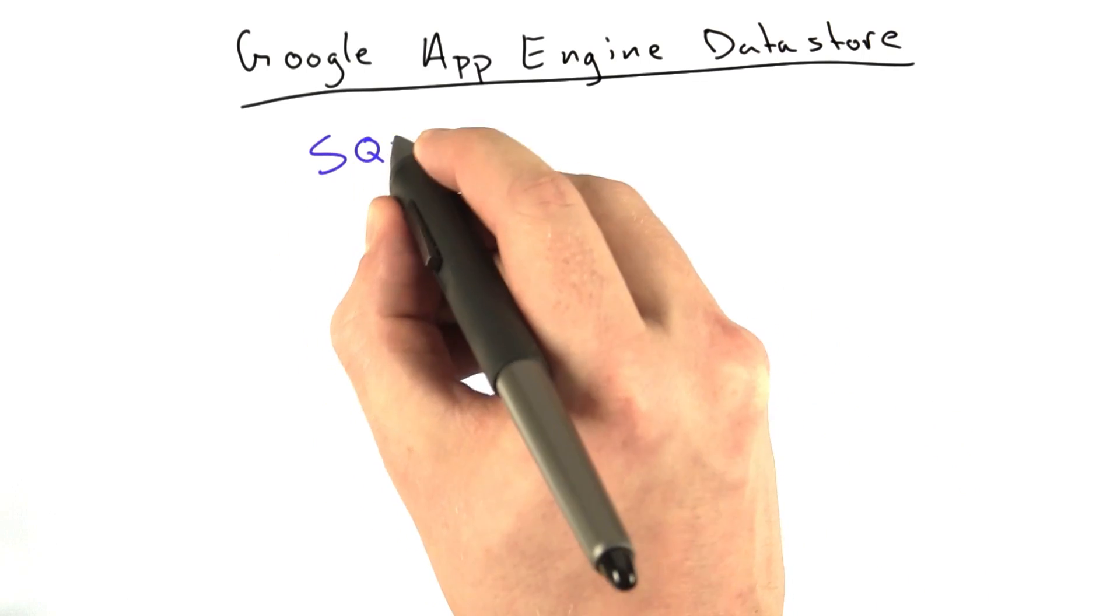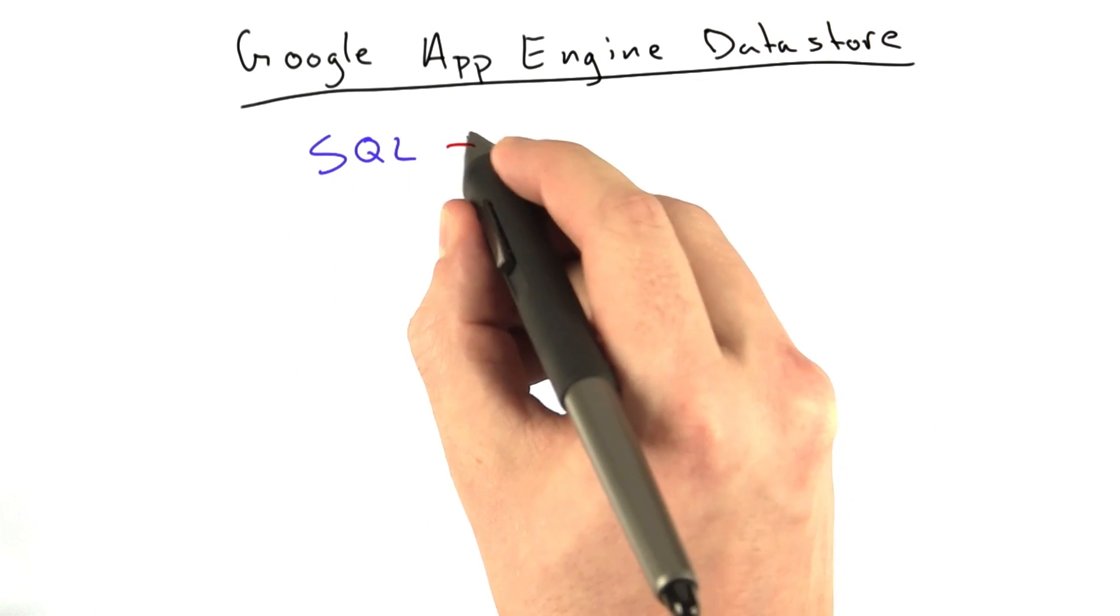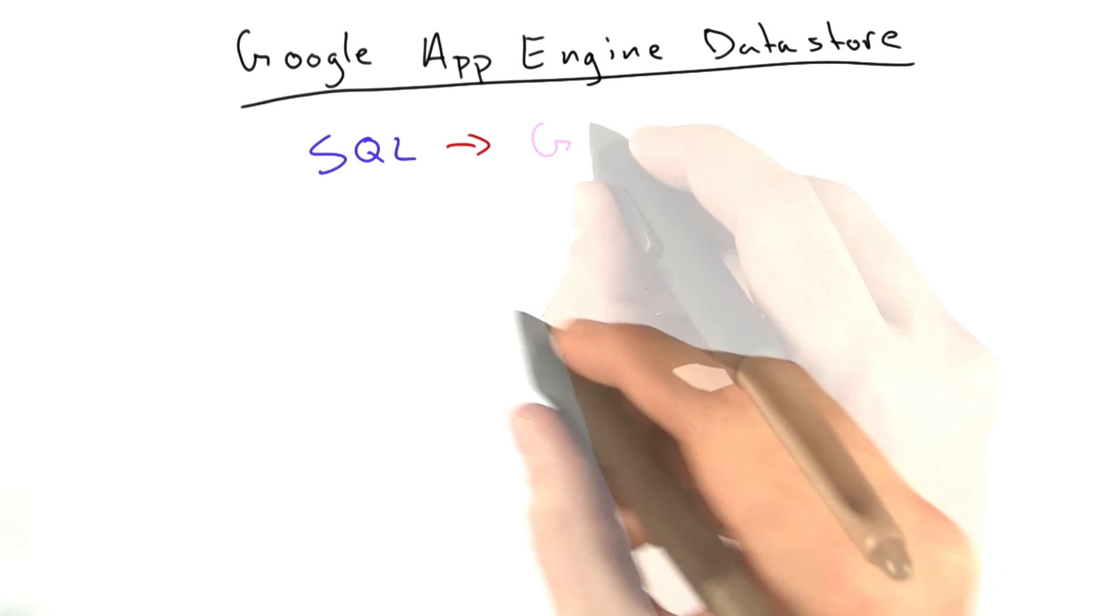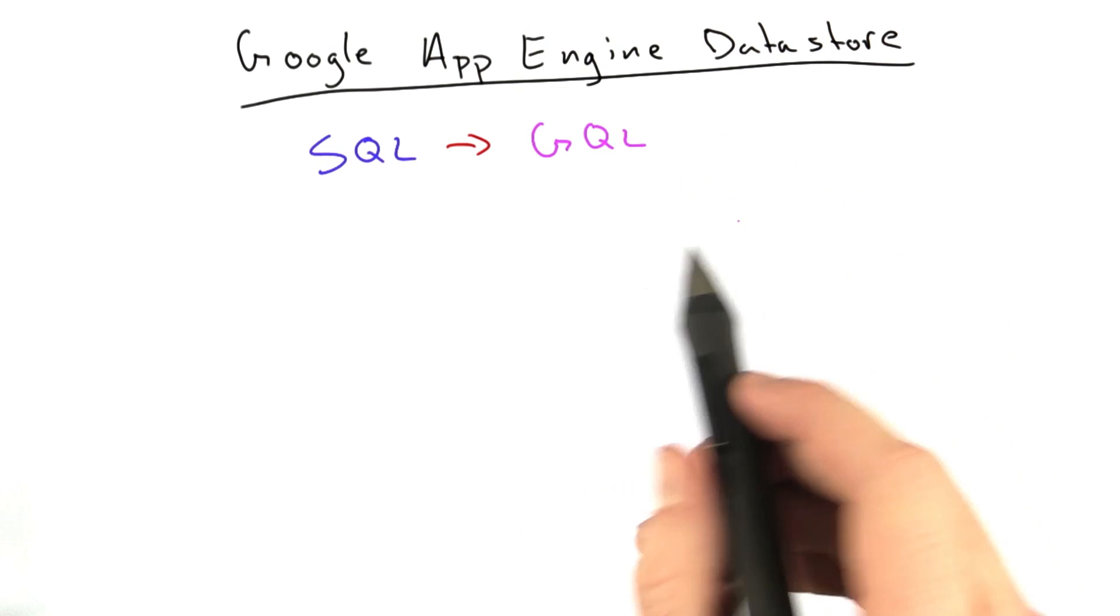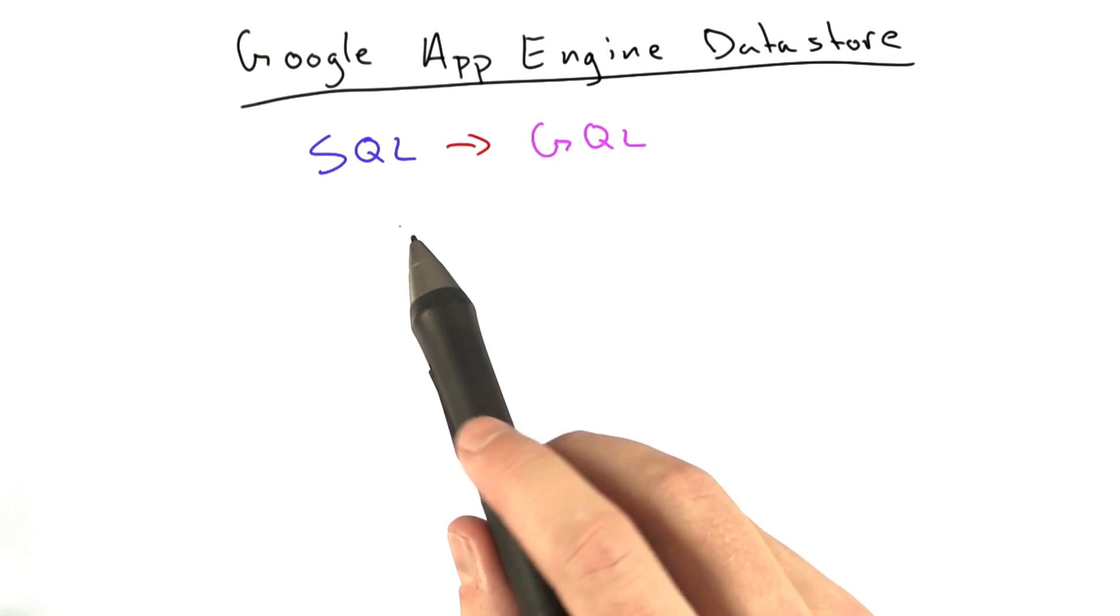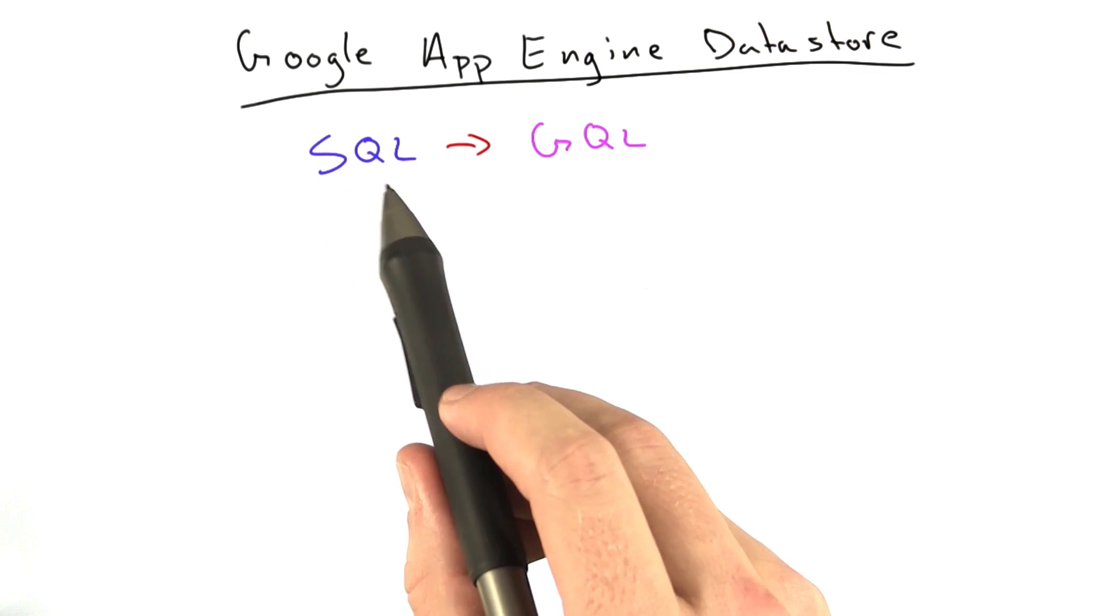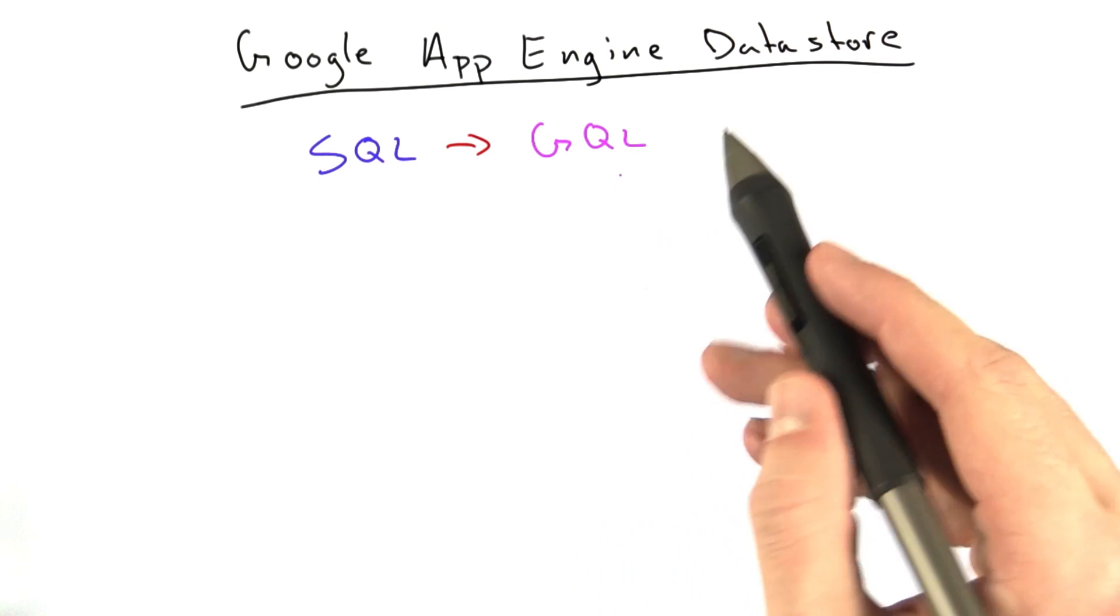Okay, another difference is in this class we've been talking about SQL, and in the App Store we've got something a little different. It's called GQL, and it's basically a simplified version of SQL that works only in the data store.